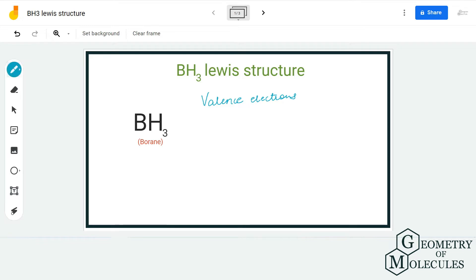Boron has three valence electrons in its outer shell, and each hydrogen atom has one valence electron in its outer shell. So we have six valence electrons for the borane molecule. Once you know the total number of valence electrons, it becomes really easy to determine the arrangement of atoms and the bonds that are formed in this structure.